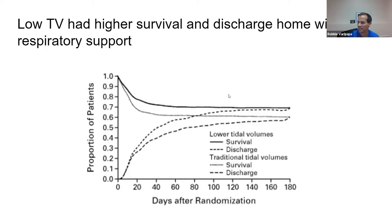Studies looking at smaller differences — like 6 versus 8 or 6 versus 10 cc/kg — are harder to show a difference in because you need enormous sample sizes. Overall, subsequent studies have shown a gradual numeric improvement in survival with lower and lower tidal volumes, but not reaching statistical significance.